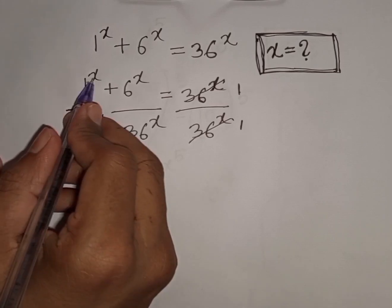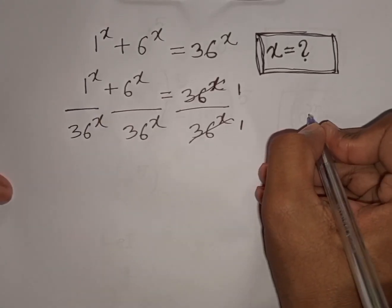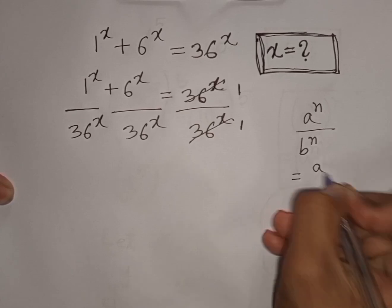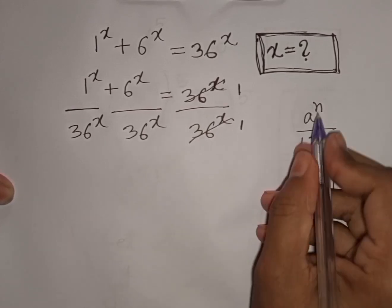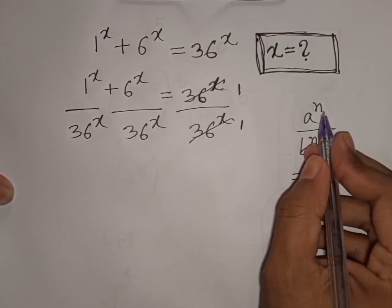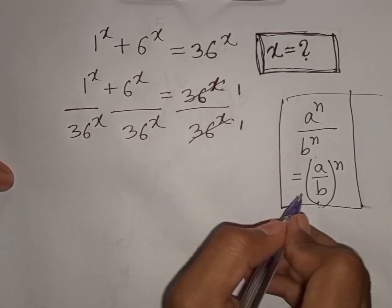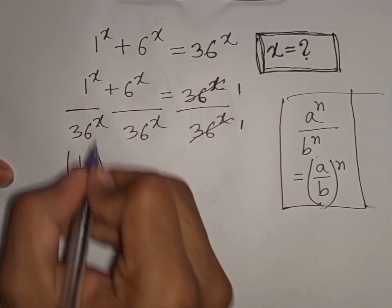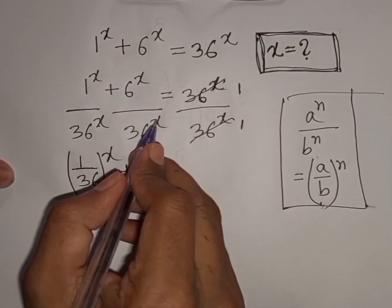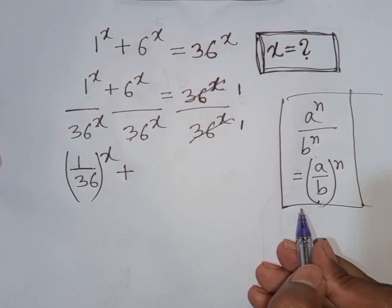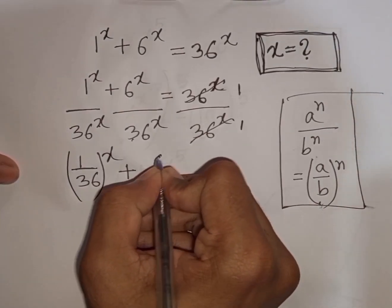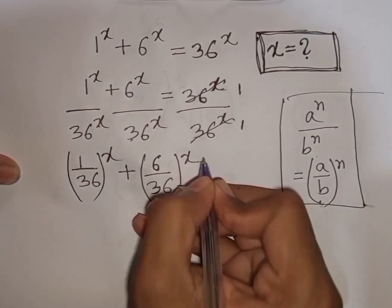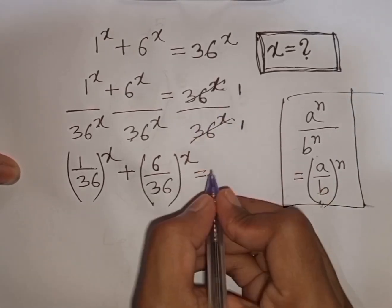From here we see x is the same power but with different bases. Remember the exponent rule: a^n · b^n = (a·b)^n. According to this formula we can write (1/36)^x + (6/36)^x = 1. That means it will equal 1.